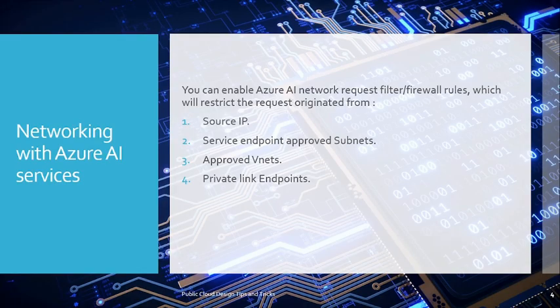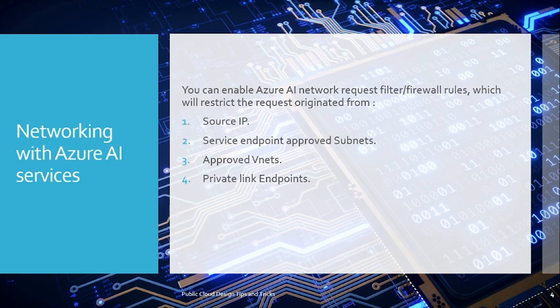The first solution provided by Microsoft Azure is that OpenAI has inbuilt firewall rules or filters, where you can restrict the source IP from where you want to connect to this OpenAI Services. You can also enable service endpoints, defining from which subnet or virtual network the service endpoint request is generated. Additionally, you can maximize network security by enabling private link endpoints. We will try to cover all of them.